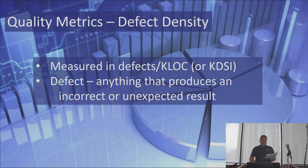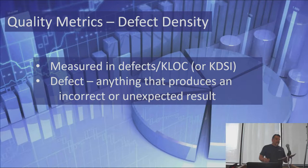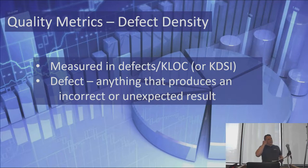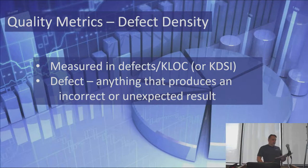Software quality is directly related to defect density. Defect density is typically measured in defects per thousand lines of code, KLOCs, or KDSI, which is defects per delivered source instructions.